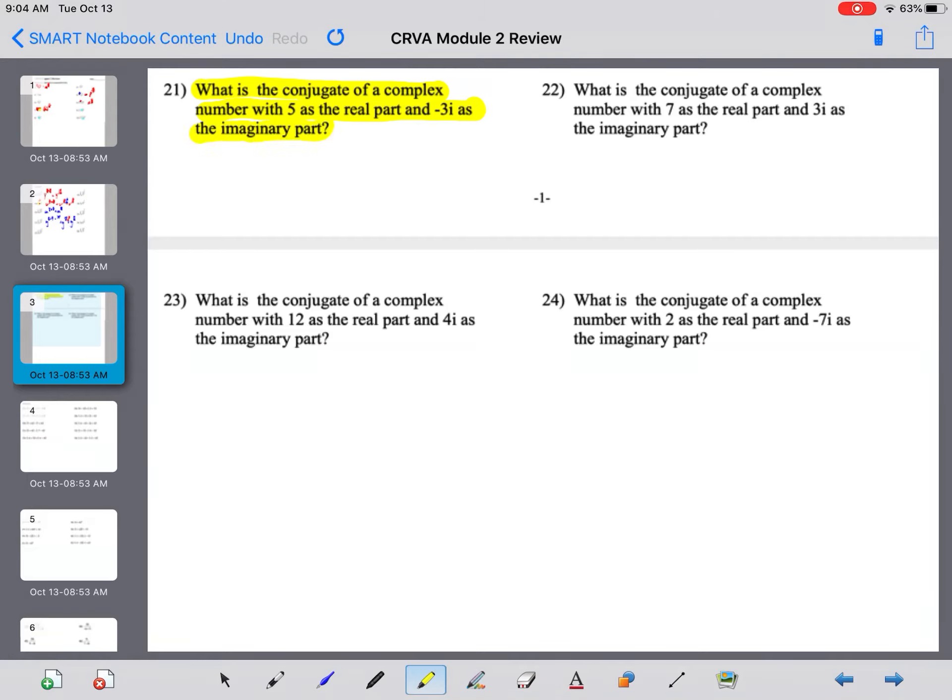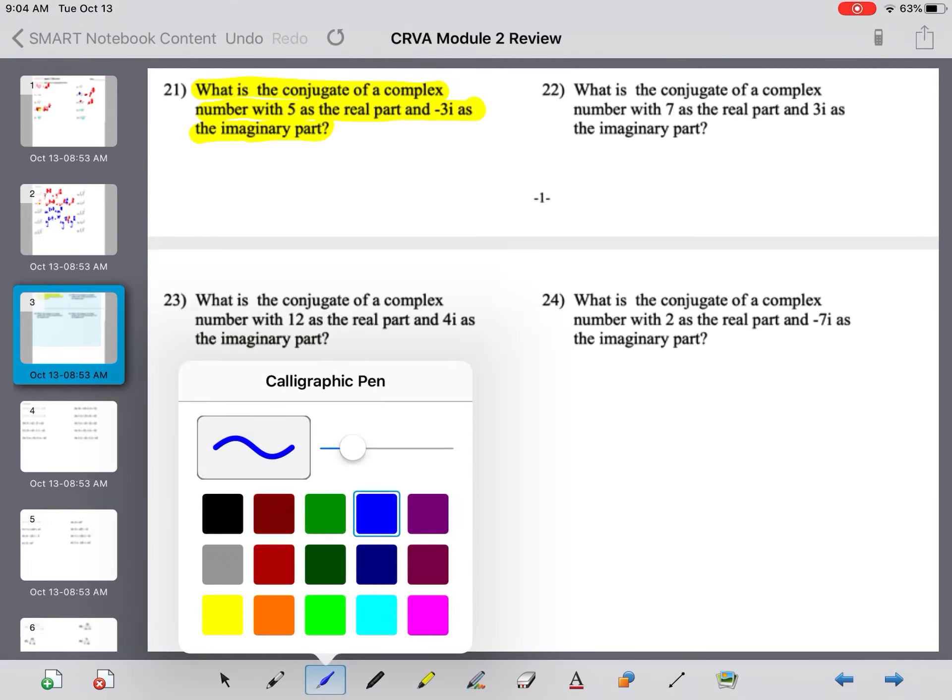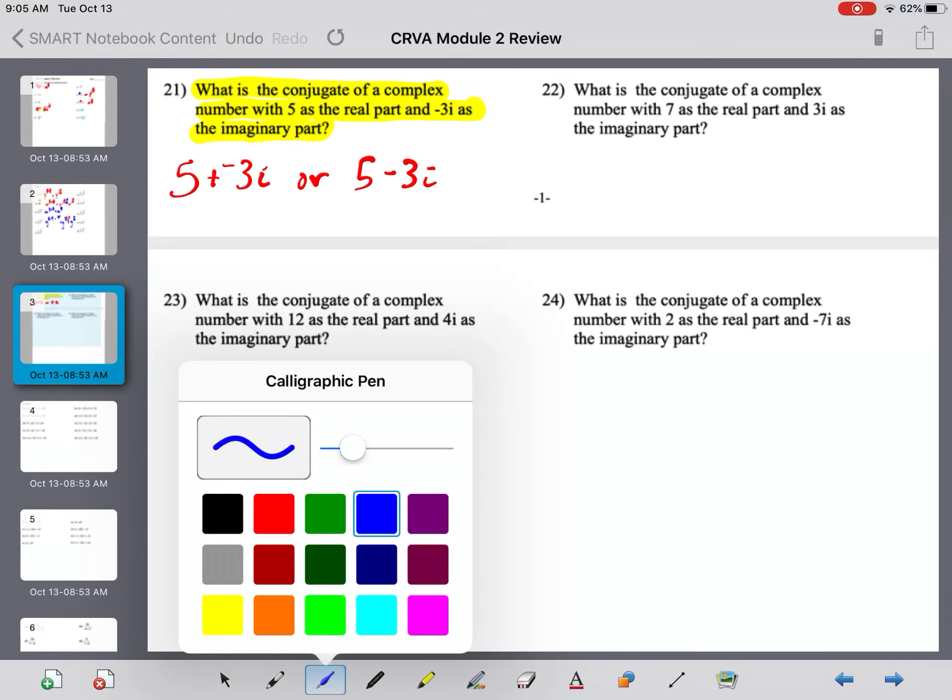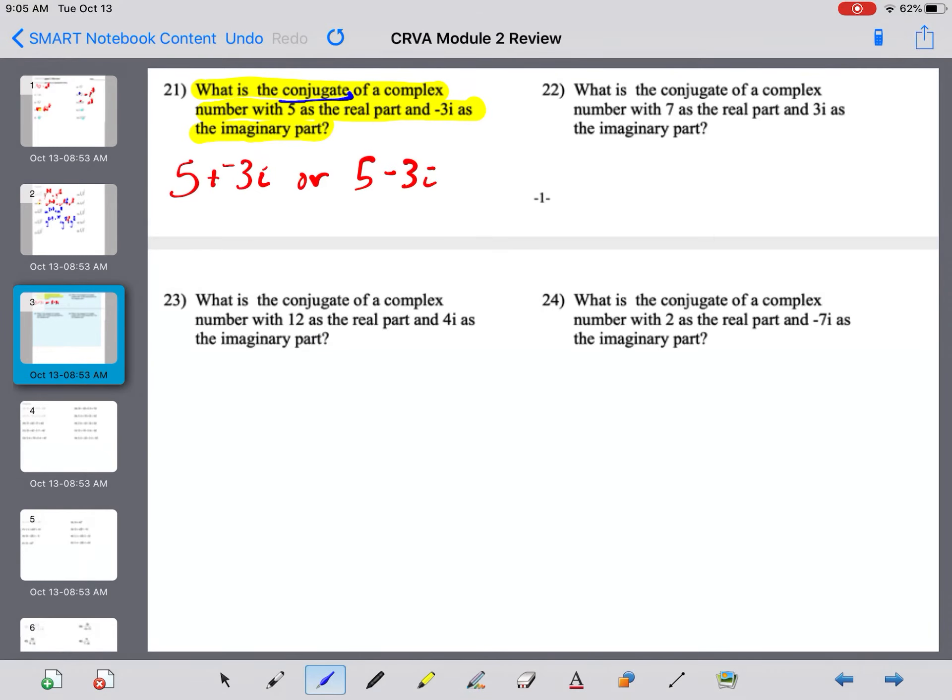It would be confusing if it was just negative 3 because imaginary is going to have an i with it. So, let's write out what we have right here. This is 5 plus negative 3i or 5 minus 3i. And they want to know what is the conjugate of that.